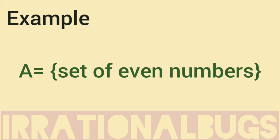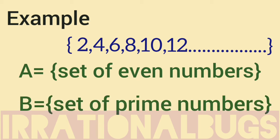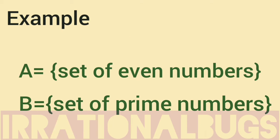For example, set of even numbers: 2, 4, 6, 8, 10, 12. We take another set, set of prime numbers. We know that only even prime number is 2. So 2, 3, 5, 7. These are prime numbers. Now, set A also has 2, set B also has 2. That means, these two sets will overlap at 2. So, they are overlapping sets or joint sets.